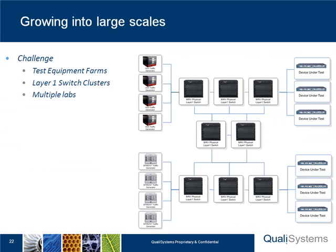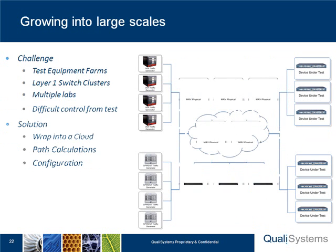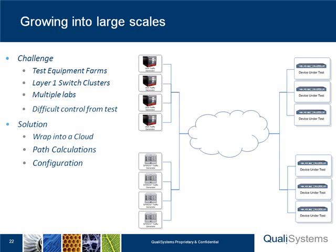In even larger scales, we're talking about testing farms, clusters of layer 1 switches, and multiple labs that want to utilize all that equipment. This becomes nearly impossible to control directly from a test. The solution would be to wrap all this cluster into one cloud, and make sure that we have the method of calculating the solution through the cloud to get the path that we want and make sure it's configured properly. We need a service in the background that gives a solution according to a requirement, and ideally the test will be completely unaware of the solution and the path.